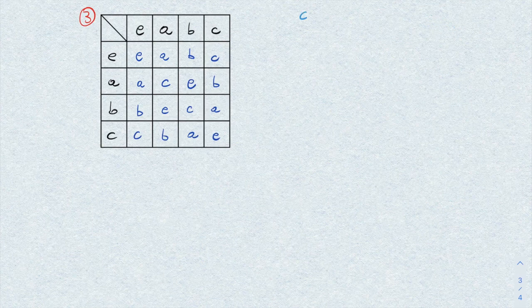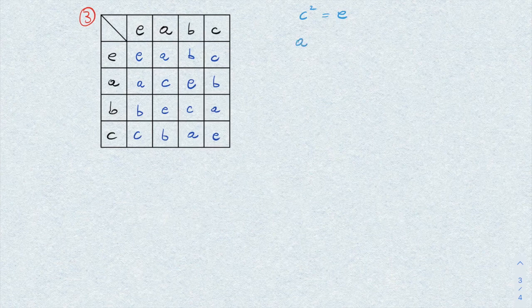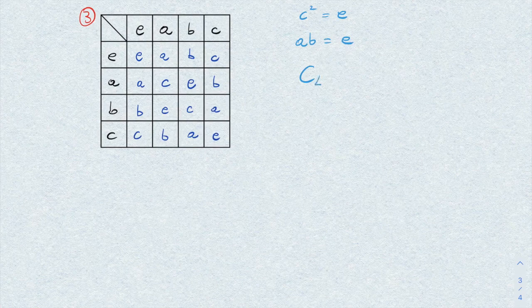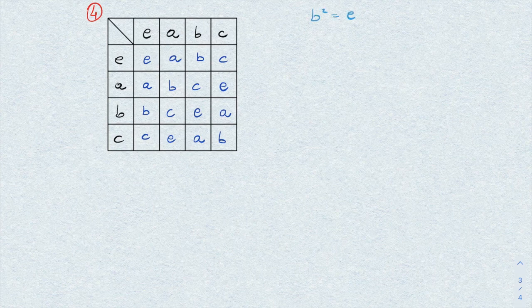For table number 3, we observe again there is an element C of order 2, and the other two non-identity elements A and B are inverses of each other — exactly the same situation as the previous table up to a relabeling of elements. We have found nothing new: this is again the cyclic group of order 4, C4. For table number 4 the situation is exactly the same: there is one element B of order 2, and A and C are of order 4, so either one generates the group.